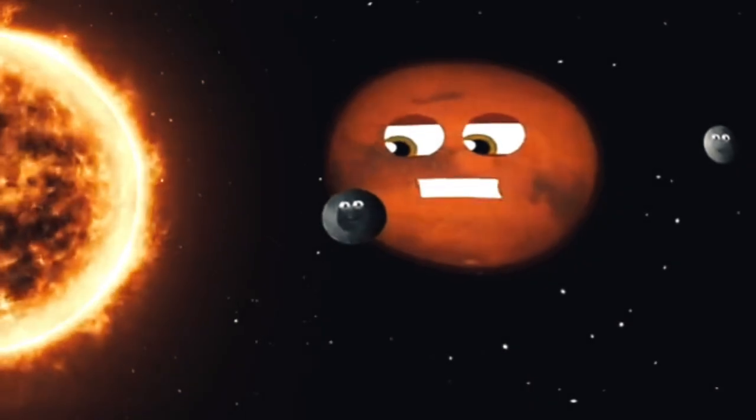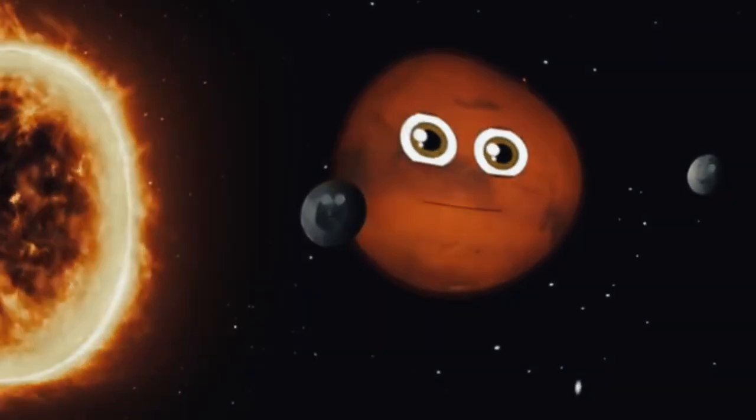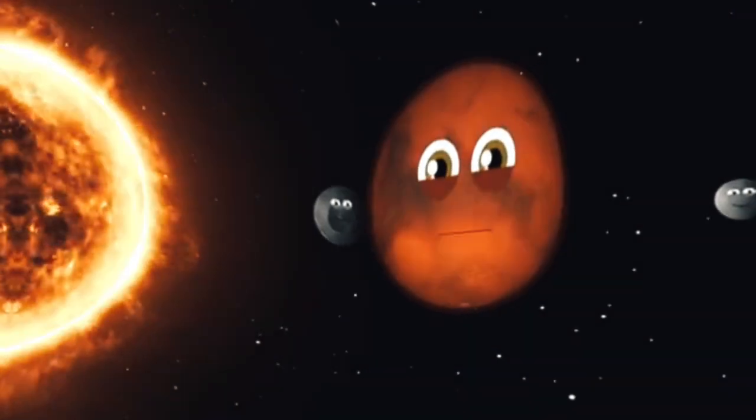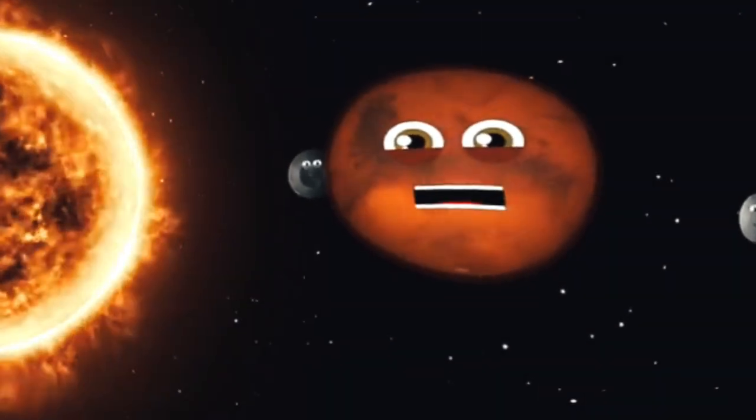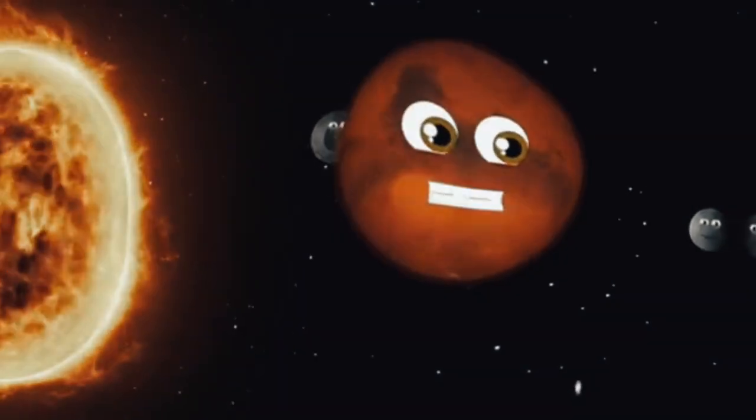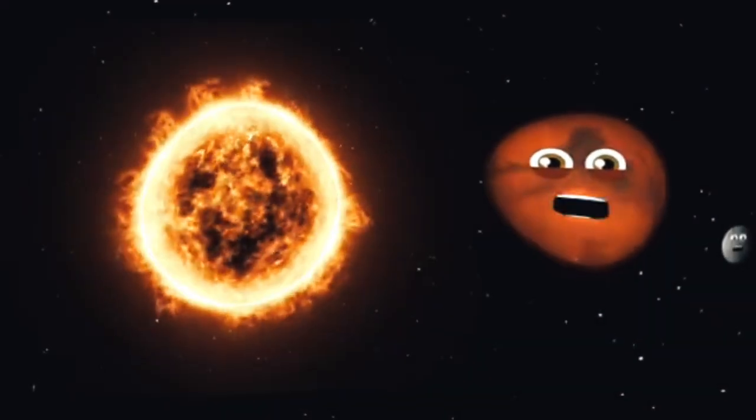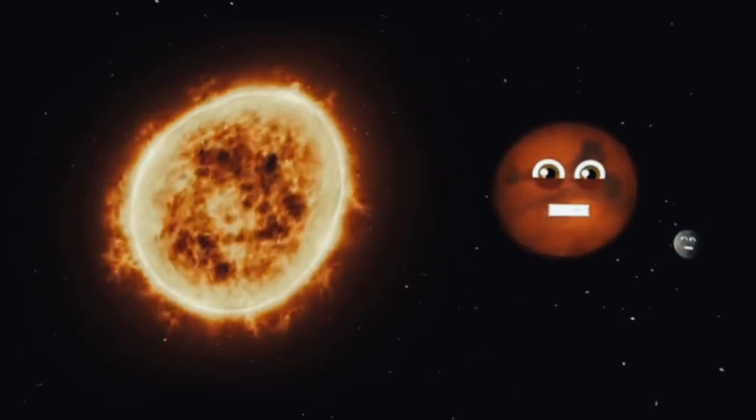Phobos and Deimos are my two moons. Phobos is larger and orbits me three times a day, that's true. But it takes thirty hours for Deimos to loop. Let's visit the planet of Mars.